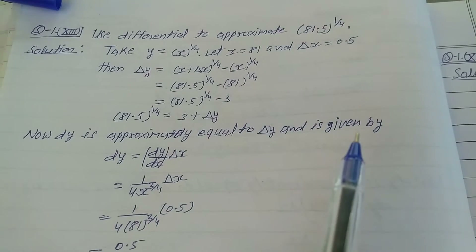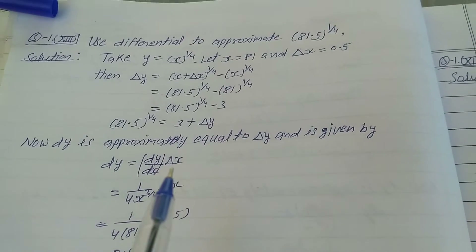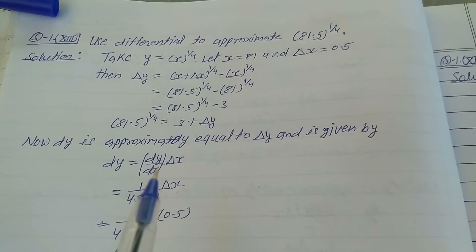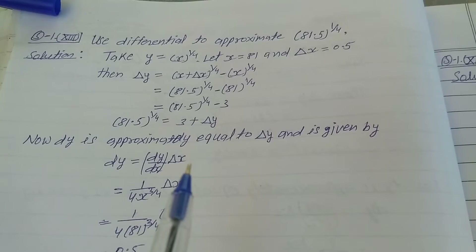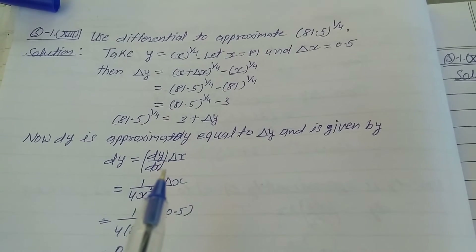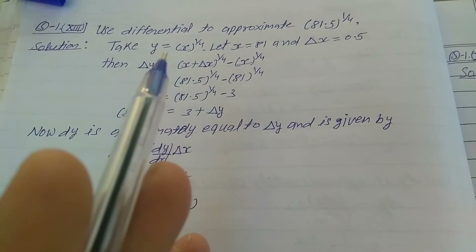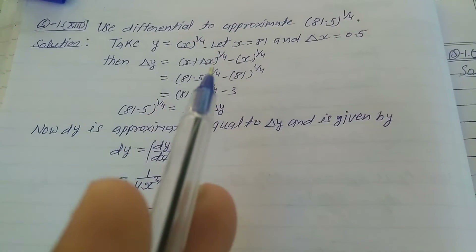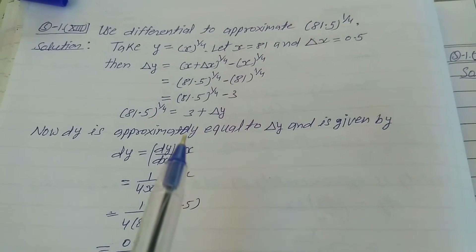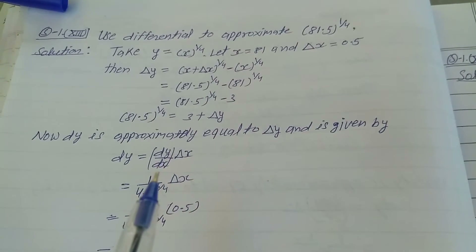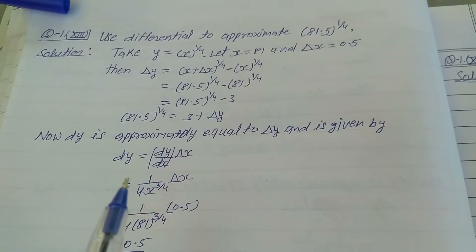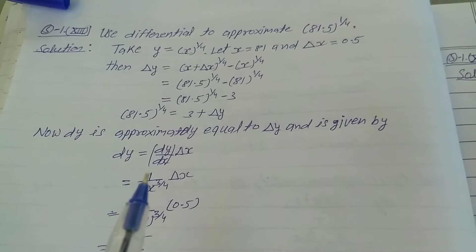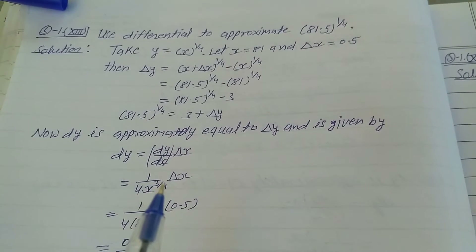Now, dy is approximately equal to delta y, and is given by dy = (dy/dx) times delta x. To find dy/dx, take y = x^(1/4).